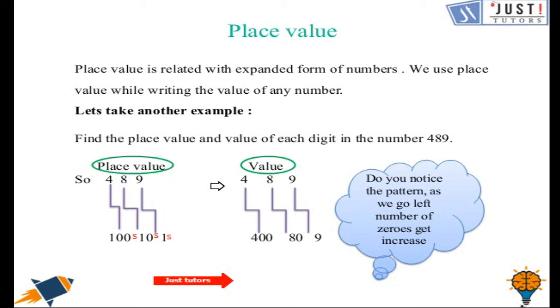Now if we look at the value. Value for 9 will be 9. 9 times 1 will be 9. Value of 8 will be 80. So that's how we can connect value to place value. 9 ones is 9. 8 tens will be 80. 4 hundreds will be 400.